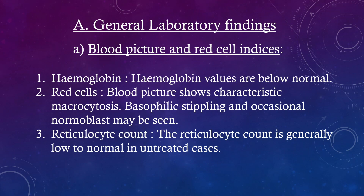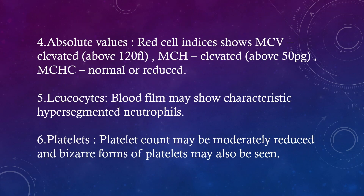General laboratory findings: Hemoglobin values are below normal. Blood picture shows characteristic macrocytosis, basophilic stippling, and occasional normoblasts may be seen. The reticulocyte count is generally low to normal in untreated cases. Red cell indices show MCV elevated above 120 femtolitres, MCH elevated above 50 picograms, and MCHC normal or reduced.